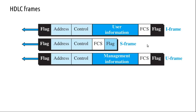The FCS, or Frame Check Sequence, pertains to error control and contains a CRC — a 4-bit CRC. So the three types of frames are I-frame, S-frame, and U-frame.